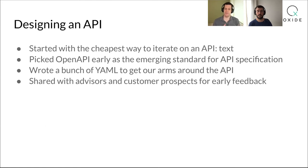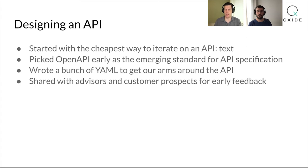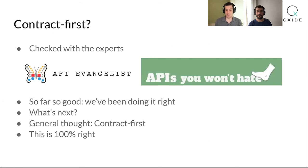Because so much of that value comes from the software, even before we started building and designing the hardware, we started designing an API. We started in the cheapest way possible, which was in a text file. We picked OpenAPI early — this emerging standard for API specification — and started writing a bunch of YAML to figure out what that API wanted to look like. We started sharing that with our prospective customers and advisors to get feedback early on how that API was going to function for folks.